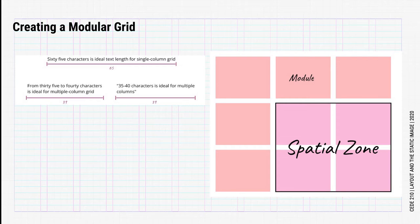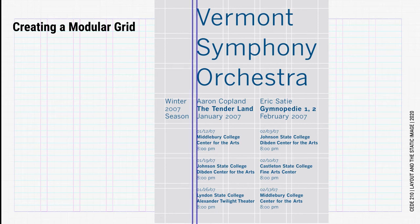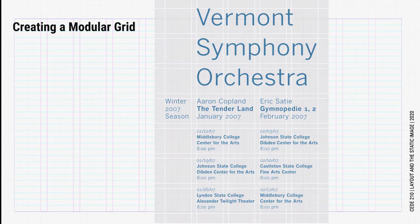The width of a module can be determined either by the average width of an image or by the ideal length of text, which is around 35 to 45 characters in a row. If an image or a block of text is much larger, designers can combine several modules into a group, again called either a spatial zone or a field. When using a modular grid, remember we want to work within the cells and not in the gutters — sometimes really tempting, but don't do it.